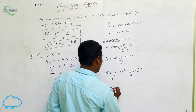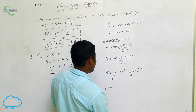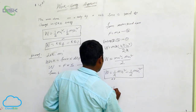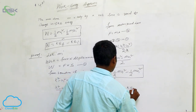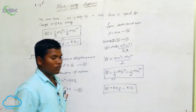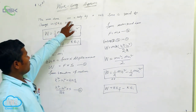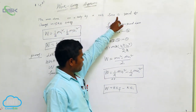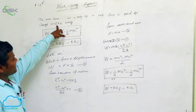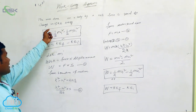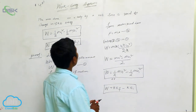We can write this as W = KE_final − KE_initial. This proves the work-energy theorem: the work done on a body by a net force is equal to the change in its kinetic energy. This is a very important result.